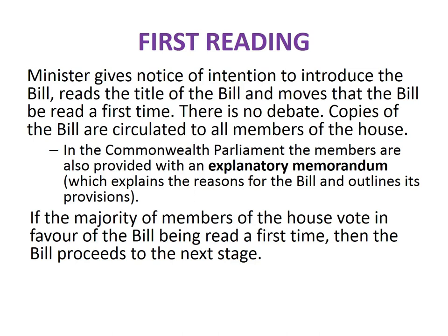However, increasingly it's the case that governments do not have the majority of members in the upper house — that is, in the Senate for the Commonwealth Parliament, or in the Legislative Council for the Victorian Parliament. This means it can be more difficult for the government to have its bills passed by the upper house. Where the government doesn't have the majority, it must rely on the votes of other members of the upper house, which could come from the opposition or from the crossbenchers.